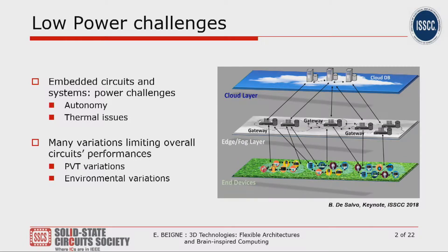Low power is still a big challenge, specifically for embedded circuits, because we want more autonomy and we have thermal issues in our circuits. Overall, there are still a lot of limitations due to variations affecting circuit performances. These variations can be PVT variations but also environmental variations. As shown in this picture, power is a challenge at each layer, and I'd like to focus my talk mainly on end devices — though 3D technologies can be applied from the cloud layer down to end devices.